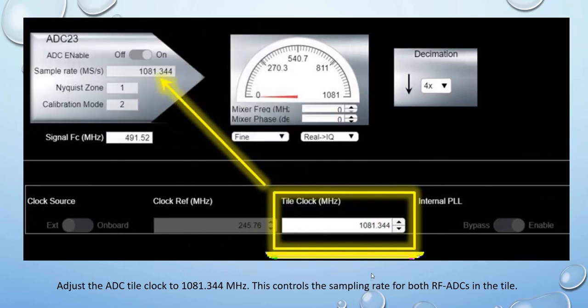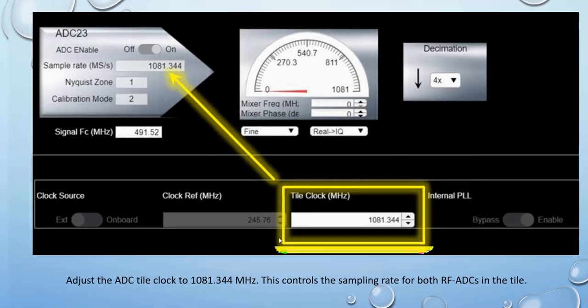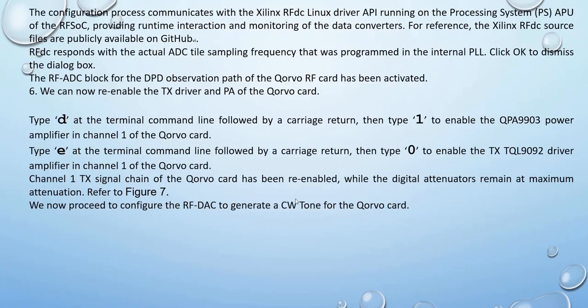Adjust the ADC tile clock to 1081.344 MHz, which controls the sampling rate of both RF ADCs in the tile. The configuration process communicates with the Xilinx RF ADC Linux driver API running on the processing system. The RF ADC responds with the actual digital sampling frequency that was programmed in the internal PLL. Click OK to dismiss the dialog. The RF ADC block for the DPD observation path of the CORBO RF card has now been activated.